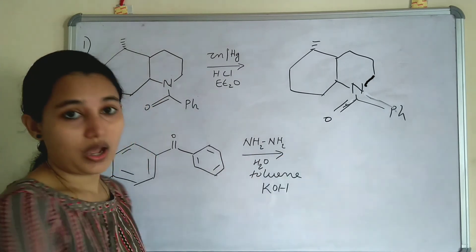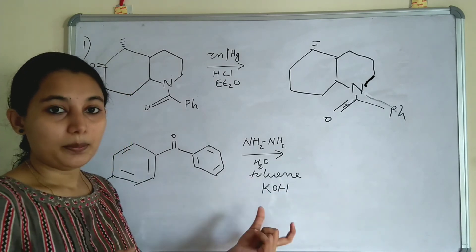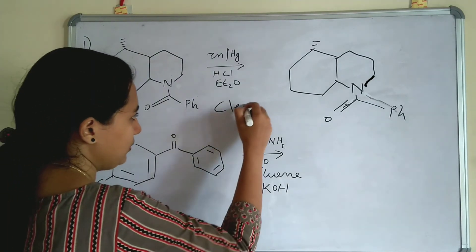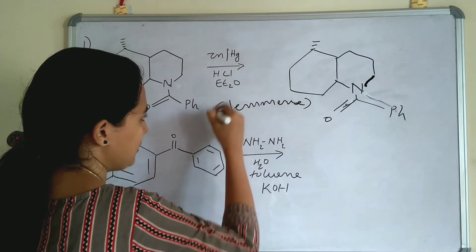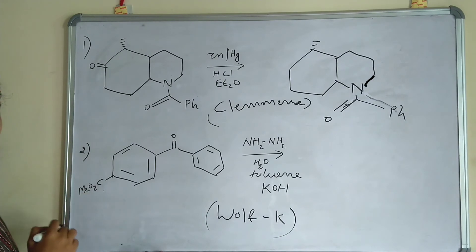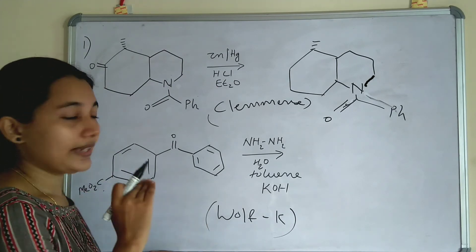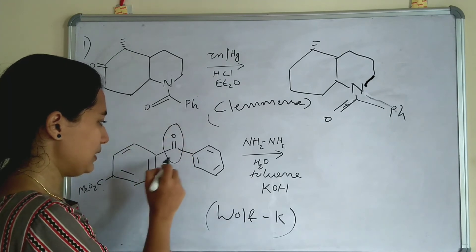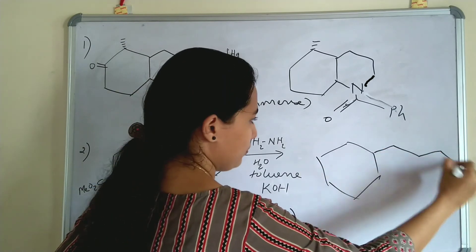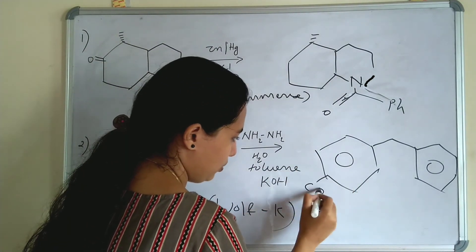The second example uses NH₂-NH₂, KOH — a base is present, so this is Wolff-Kishner Reduction. Here, a CO₂Me (ester) group is present. An ester is a carbonyl compound but not an aldehyde or ketone, so it cannot be reduced. A ketone C=O is also present, so only that C=O is reduced to CH₂, and the ester CO₂Me remains unchanged.